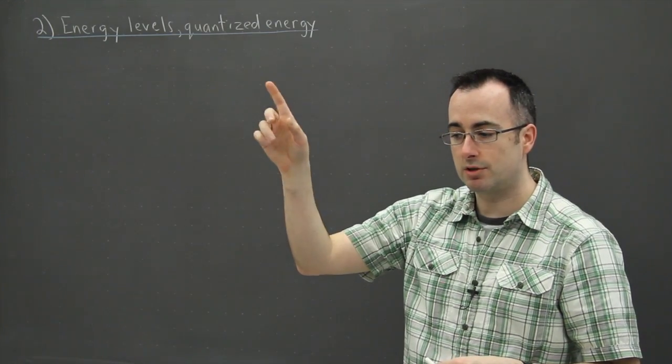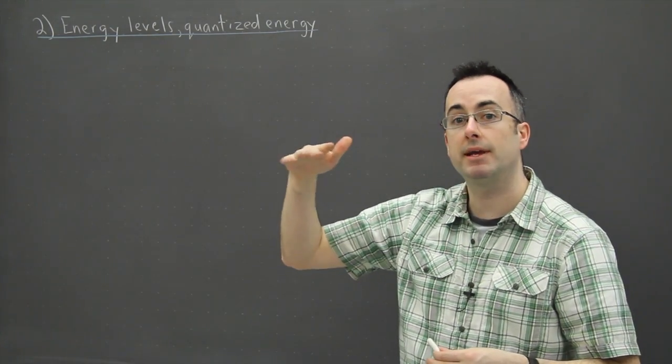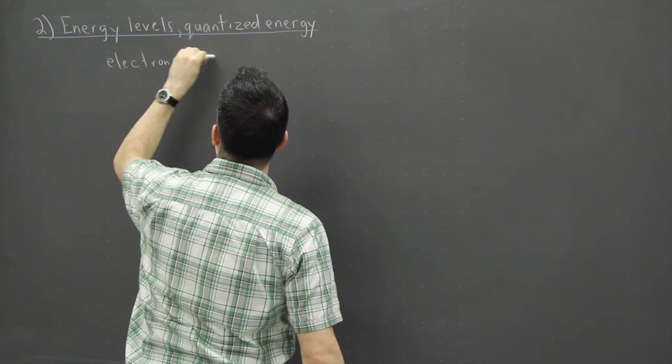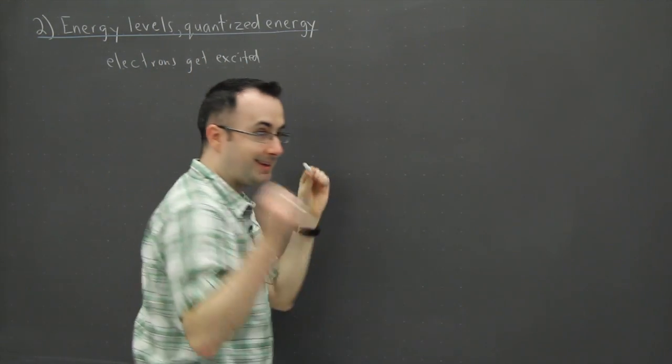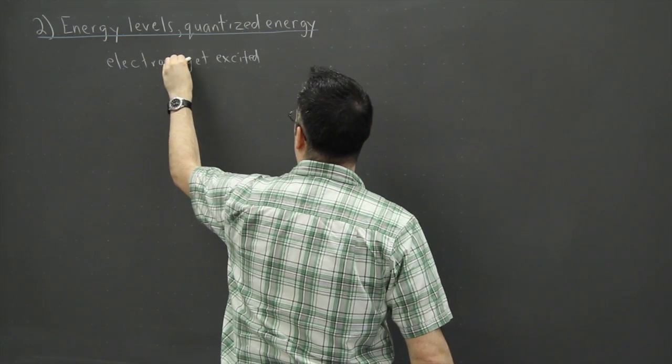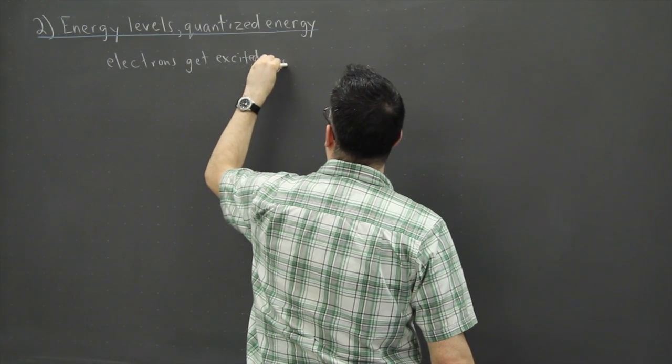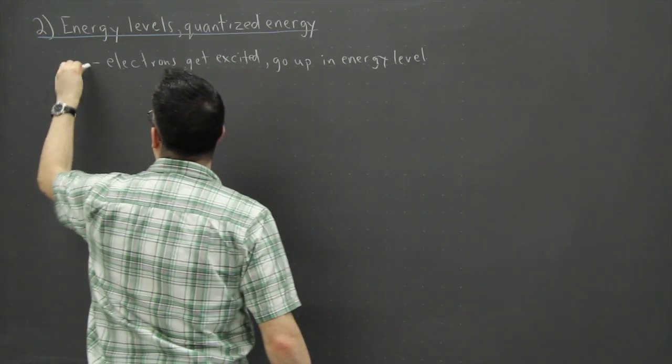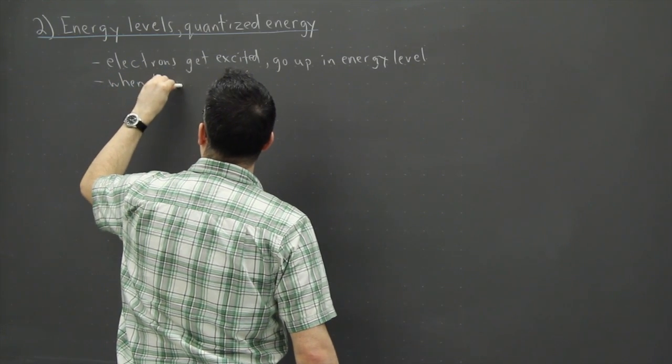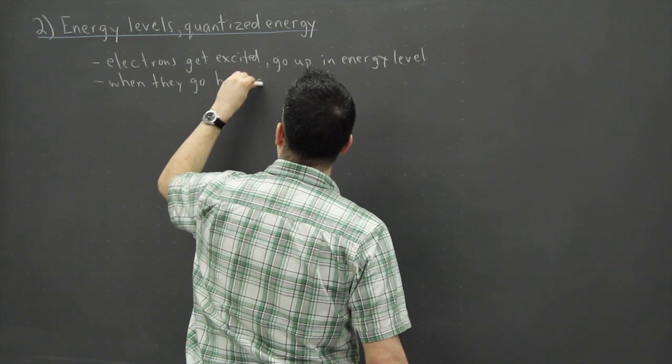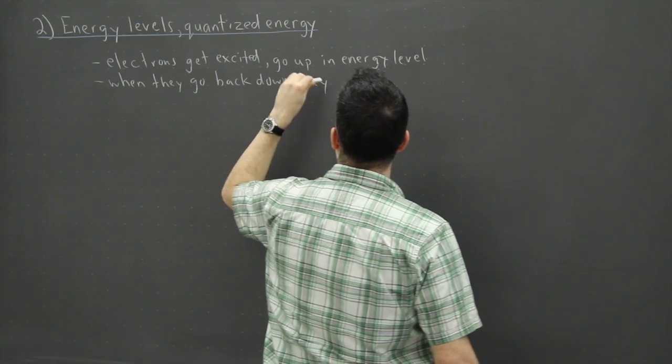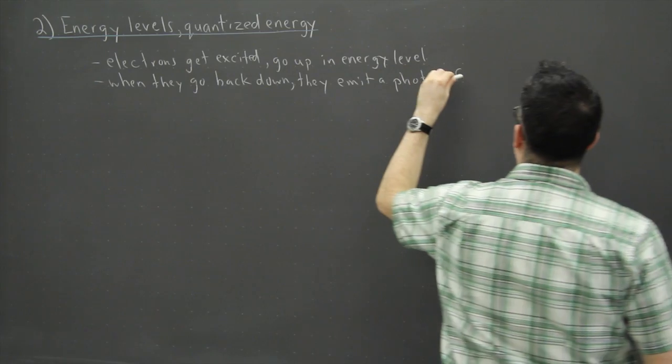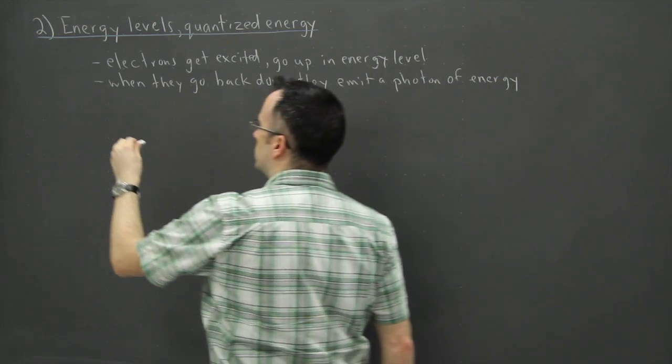These are fluorescent lights, so what's happening is they're being zapped with energy and the electrons are going up in energy. The electrons get excited—I don't mean they're like 'yes!', I just mean they go up in energy. They get excited, go up in energy level. However, sometimes they go back down, so when they go back down they emit a photon of energy. This is the key thing here: E equals HF.